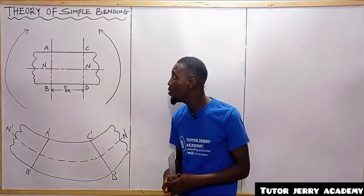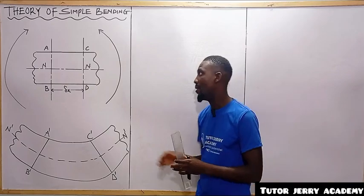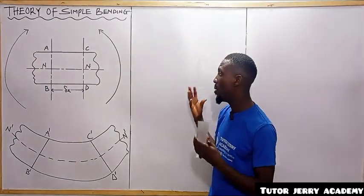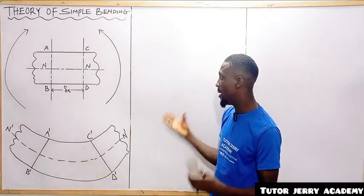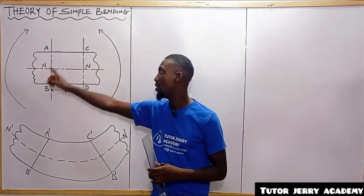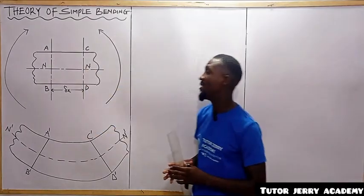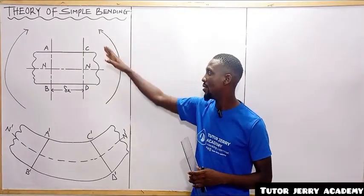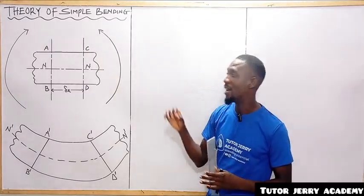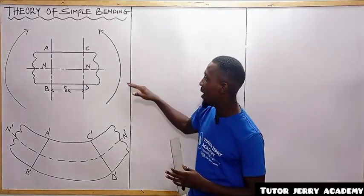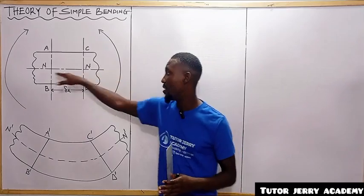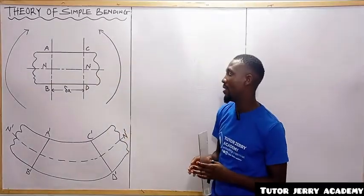The above shows a part of a beam subjected to pure bending. We consider two sections: the first section is section A-B, and the second section is section C-D. These two sections are normal — that is, at 90 degrees — to the neutral layer, which is the neutral axis.